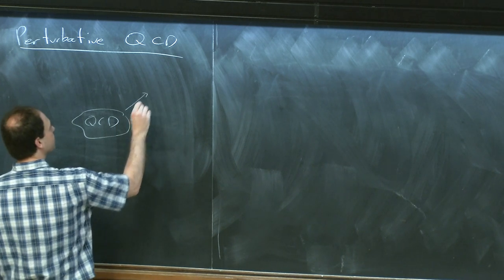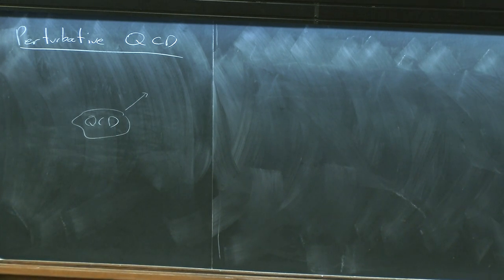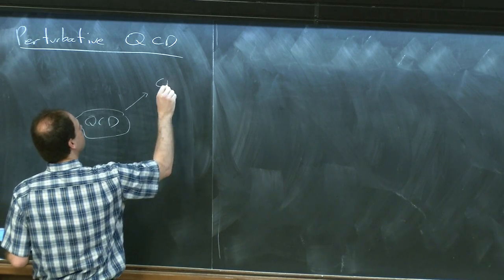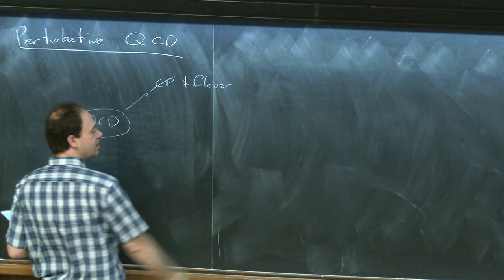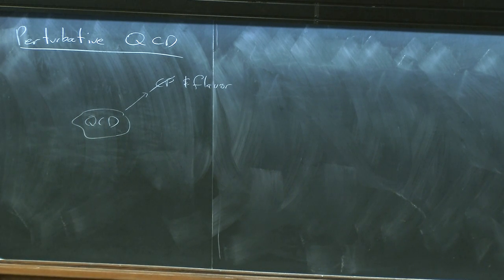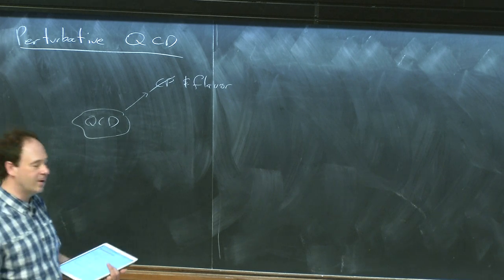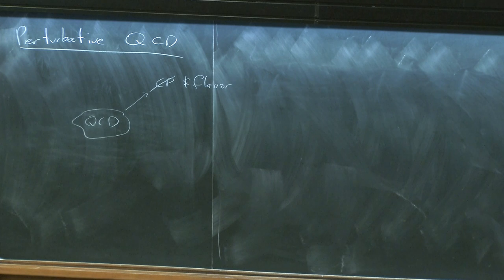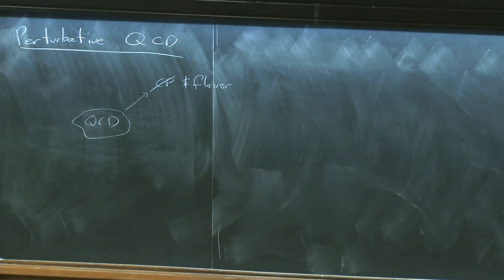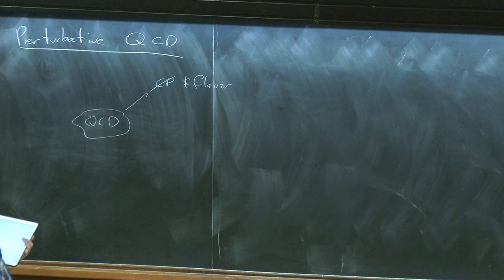One example, related to the lectures you just heard from Yossi, is CP violation in flavor physics. QCD is relevant here because we're talking about things like a B meson, which is a hadron and is confined, so there's QCD physics involved in understanding CP violation in flavor. There are strong phases as well as the weak phases that are CP violating, and you have to understand both to understand what's going on in a CP violating process.